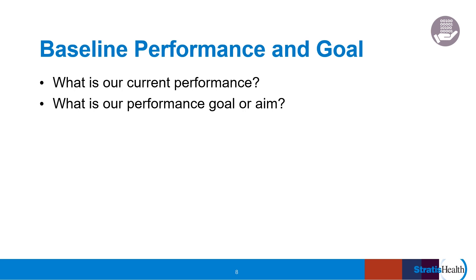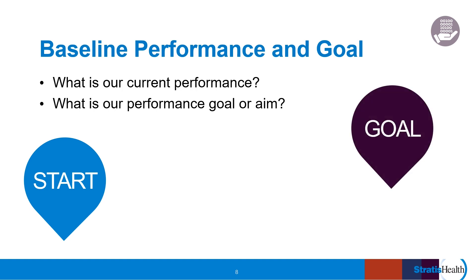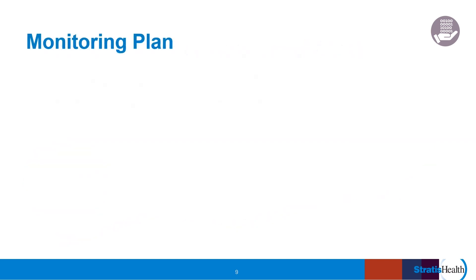In your data collection and monitoring plan, you'll want to capture your current or base performance. How are you doing now? If this isn't a measure you've collected before, that's all right — you can document that. You'll also want to document what your performance goal is. Where do you want to get with this particular measure? So far, you've determined what data you're collecting, who's collecting it, as well as when, how, and where it is being stored. You know how you're performing currently and what your goal is. Now you need a plan for monitoring the data.